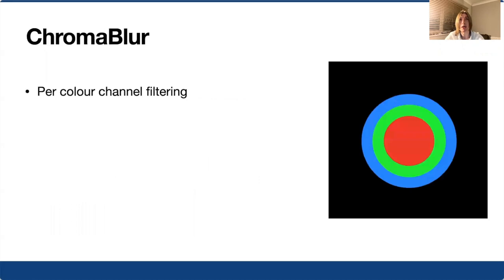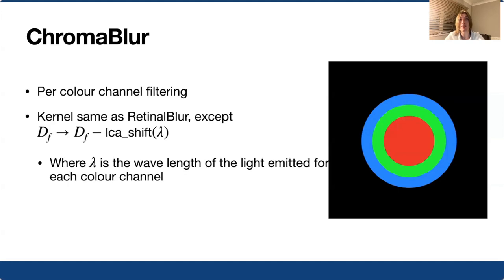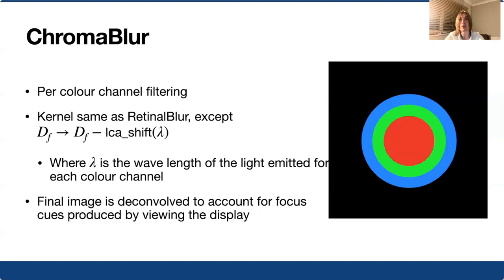In the chroma blur condition, much like in the retinal blur condition, out of focus content is convolved with a cylindrical kernel whose diameter is computed using equation one from the previous slide. However, this convolution kernel is computed on a per-color channel basis. The focal depth is offset according to the wavelength of the light emitted by each channel, and so each channel is convolved with a kernel of slightly different diameter.